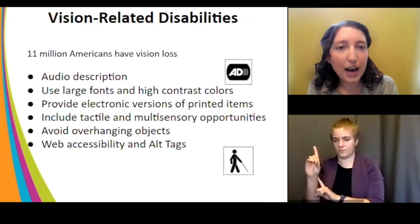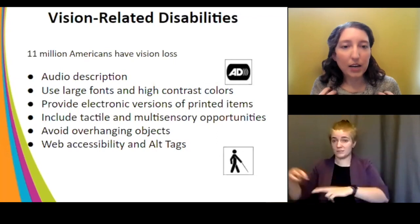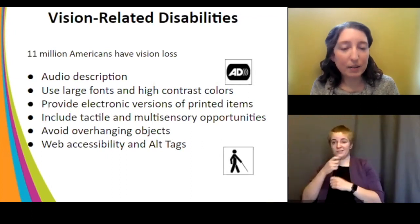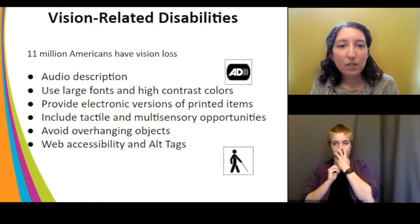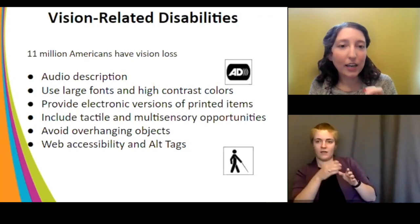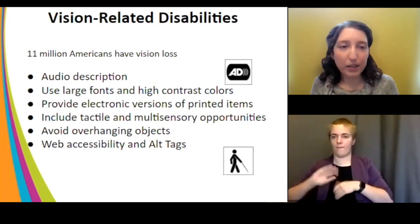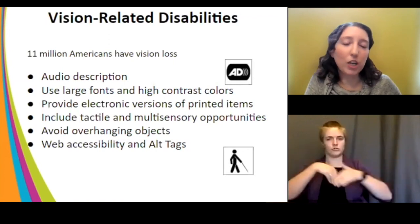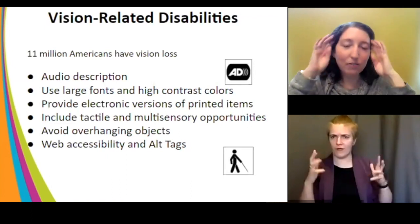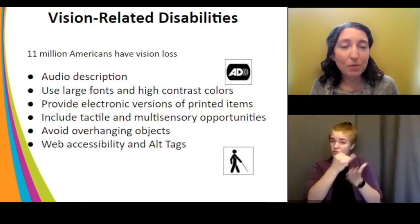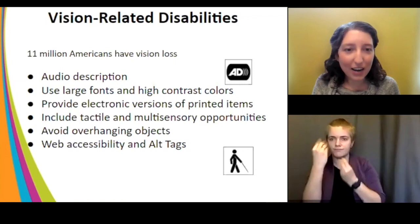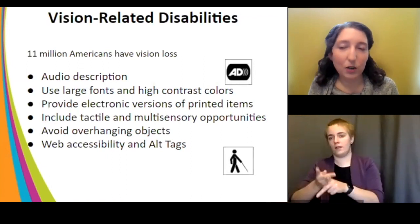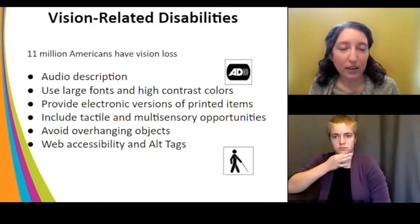Audio description is a really useful tool for people with vision-related disabilities, especially for live performances. The person who is blind or has low vision sits in the audience with a headset connected wirelessly to an audio describer sitting in the back, who speaks in between the lines of dialogue, describing physical movement on stage and pointing out important elements crucial to the plot. There's real art to audio describing — you have to convey a lot of information without stepping on the actors' dialogue. Audio description equipment is also available through the CCAC equipment loan program.